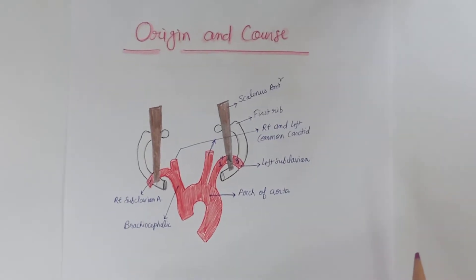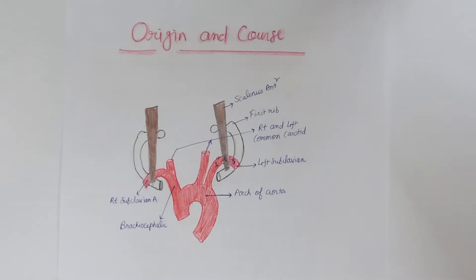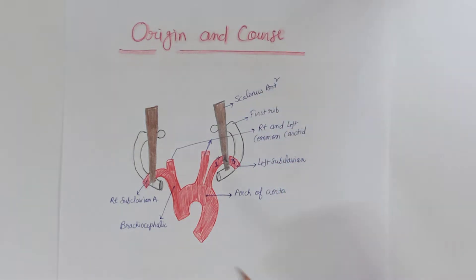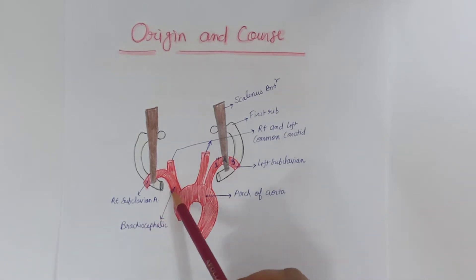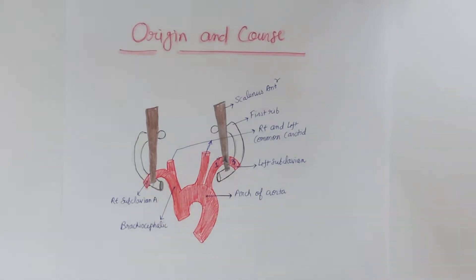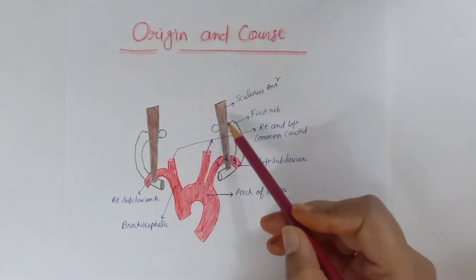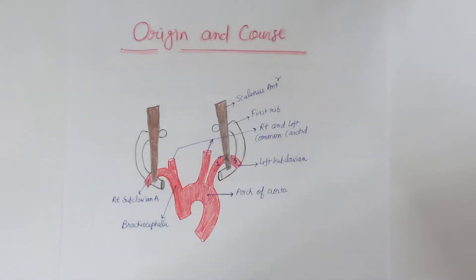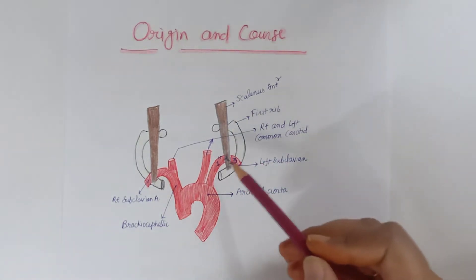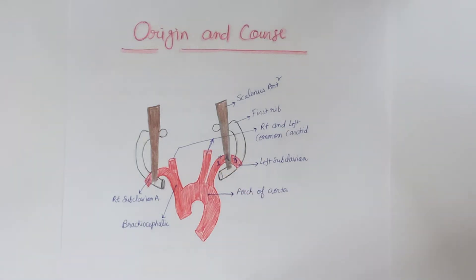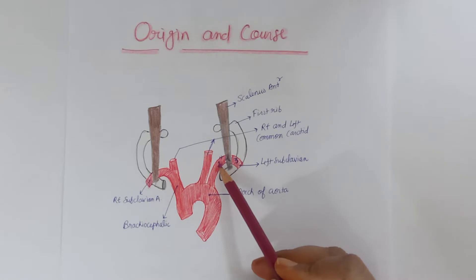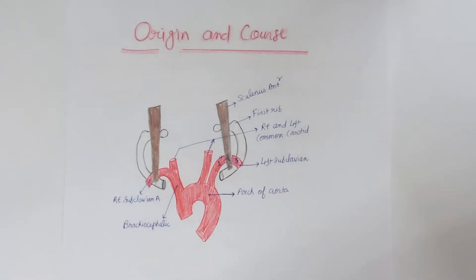In this diagram we can see the origin and course of the subclavian artery: the arch of aorta, brachiocephalic trunk, right subclavian, left subclavian, and right and left common carotid arteries. The scalenus anterior muscle crosses the artery anteriorly and divides it into three parts: the first part medial to the muscle, the second part posterior to the muscle, and the third part lateral to the scalenus anterior muscle.